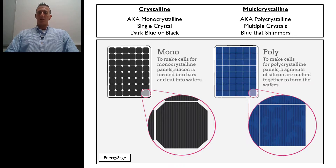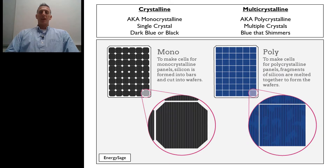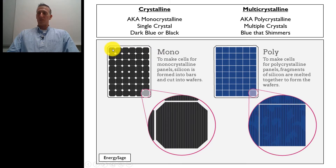A crystalline module is also known as monocrystalline. This is where a single crystal is grown and then cut into wafers — that's a simple way of how they produce and build these types of crystalline modules. It will be a dark blue or a black color. When you look at the module, you'll see that it's very dark — dark blue or black — and you don't see a lot of different colors on it; it's just really flat.